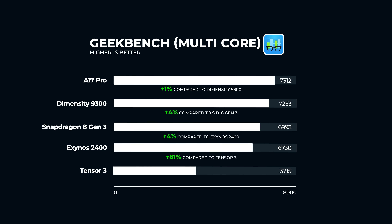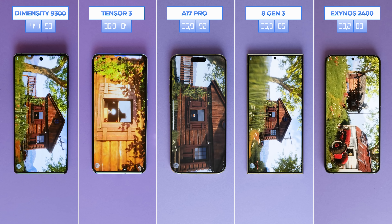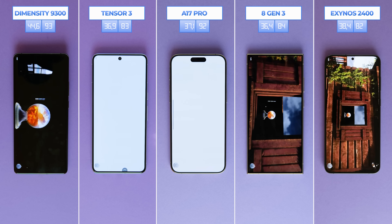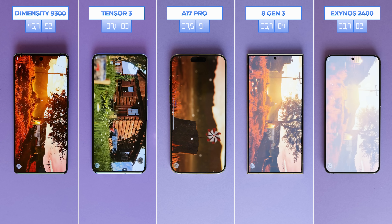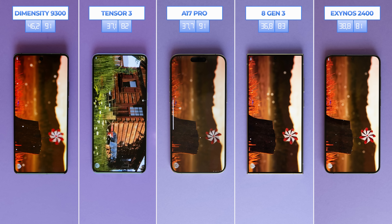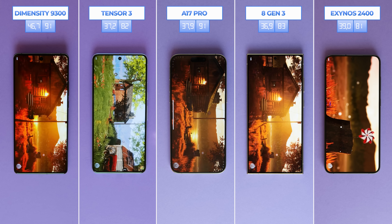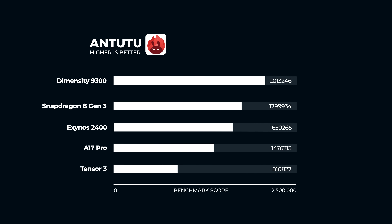Antutu is up next. Important note: Antutu is incomparable on Android and iOS due to the kernel and development language being different. Nevertheless, that's not going to stop us from doing these tests. Dimensity actually manages to reach over 2 million points here with their powerhouse chipset. Snapdragon is second, as Exynos rounds out the top three. A17 Pro and Tensor take 4th and 5th place respectively. Feel free to comment on anything you find interesting regarding any of the tests.